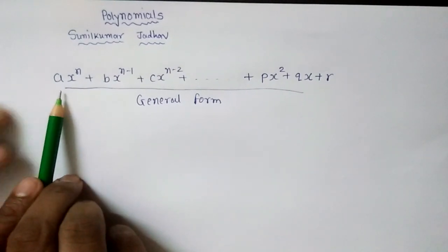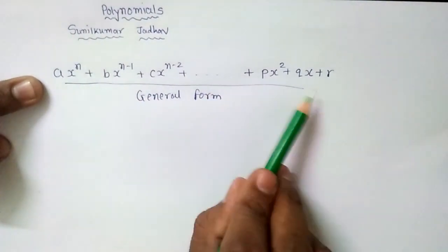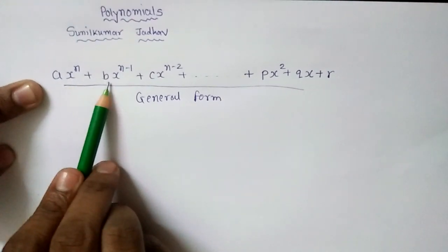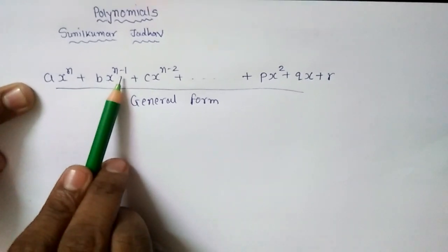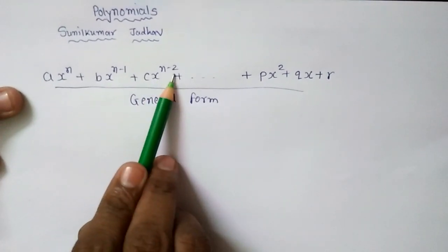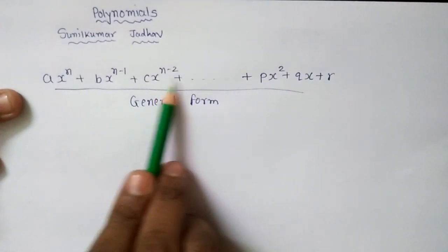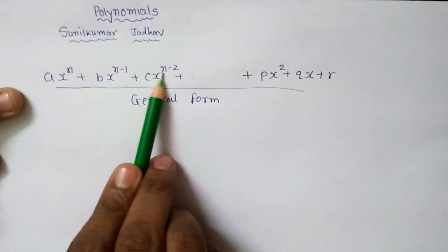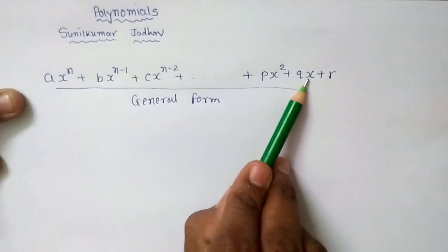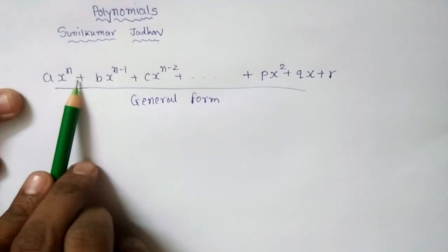What is the meaning of this general form? In this general form we can see a, b, c, p, q, r — all these are the coefficients. The power of x starts at n, and in each consecutive term the power decreases by 1: n, then n minus 1, then n minus 2, and so on, decreasing one by one, ultimately down to x raise to 2, x raise to 1, and x raise to 0.